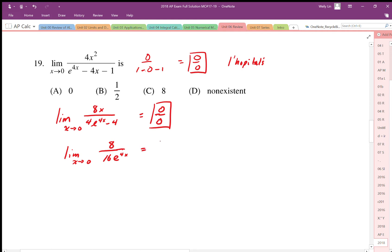Then we try to evaluate this limit again. In this case we end up with eight over e to the zero, which is one, so we get eight over 16, which simplifies to one half. So our solution is B.